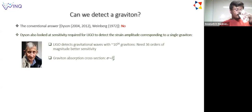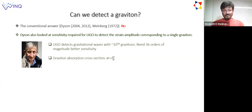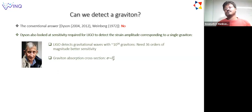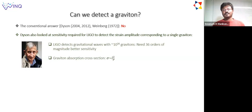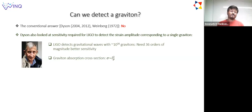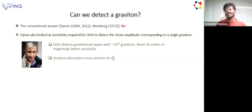I would like to acknowledge the conventional answer to this question, which is no. Dyson has looked into this question and, among many things, he looked at the strain sensitivity required by LIGO to detect a single graviton strain amplitude. LIGO detects classical gravitational waves with certain energy density; you can divide that by a single graviton energy density to compute the number of gravitons in a single LIGO event. It turns out to be a large number—10 to the 36 gravitons are contained in a single gravitational wave that we can detect in the LIGO band.